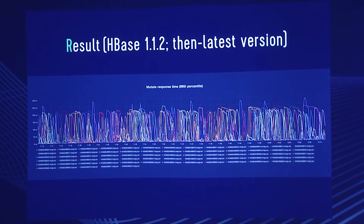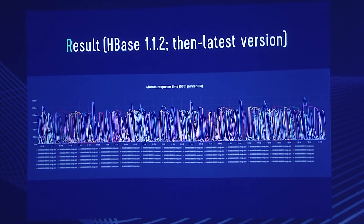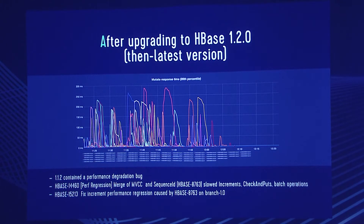So we imposed a load similar to commercial on the shadow cluster. The vertical axis shows the response time at the 99th percentile, and the horizontal axis shows the timeline. Response time showed some spikes, and for the vertical numbers, we saw 200ms or 300ms, so speed was relatively slow and we were a little worried. But when we took a closer look, it seems like version 1.1.2 had some bugs. And when we upgraded to HBase 1.2.0, those problems easily got solved. So it was quite risky if we hadn't gone through the testing. With 1.2.0, we checked all the indices and knew that this was a safe version to upgrade to.